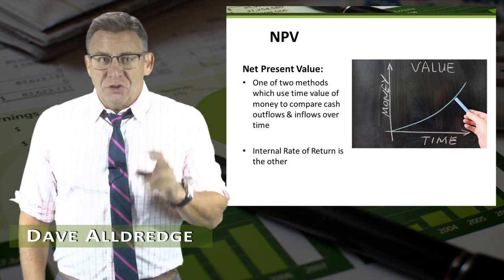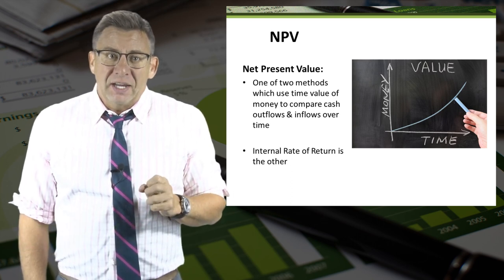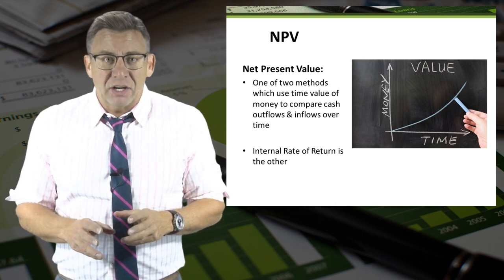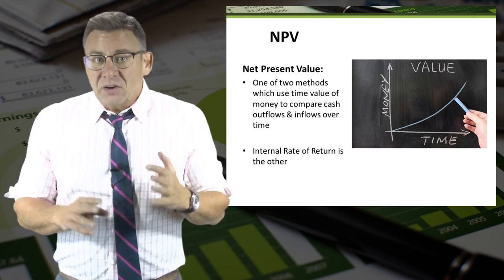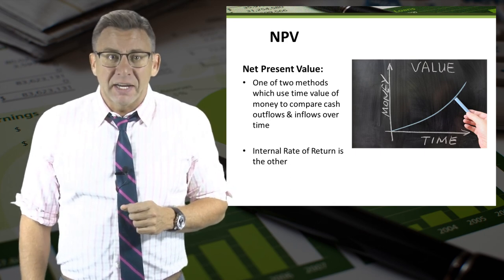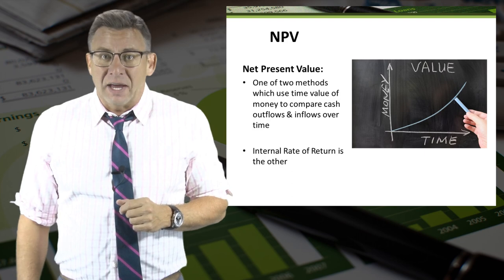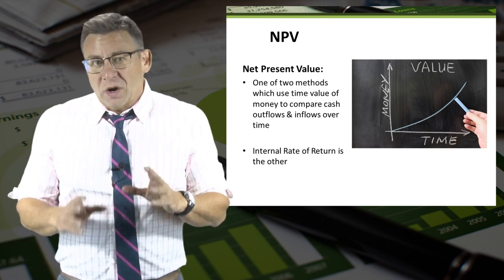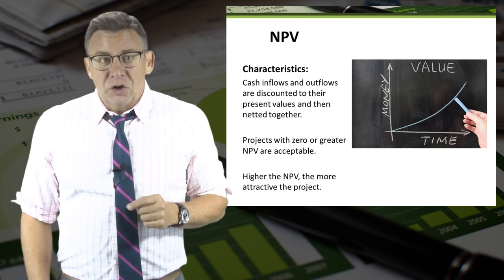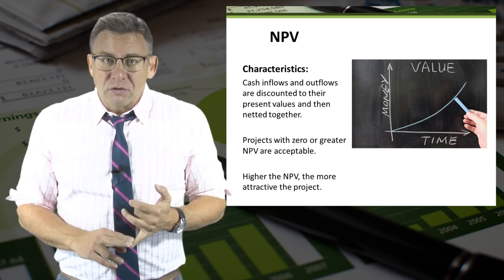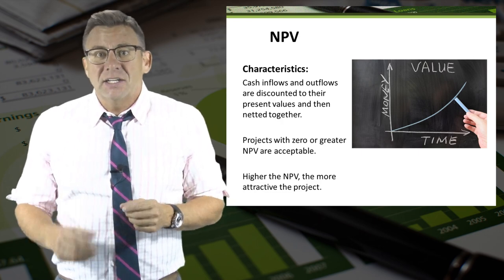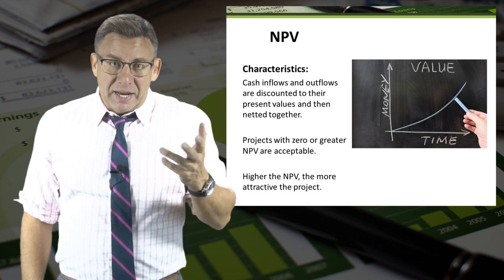Net present value is one of two capital budgeting analysis techniques to consider the time value of money in its calculations. The other is the internal rate of return. Recall that the payback period technique does not consider the time value of money, and that is one of the weaknesses of that method. Key characteristics of this method include that cash inflows and outflows are discounted at their present value and netted together to arrive at net present value.